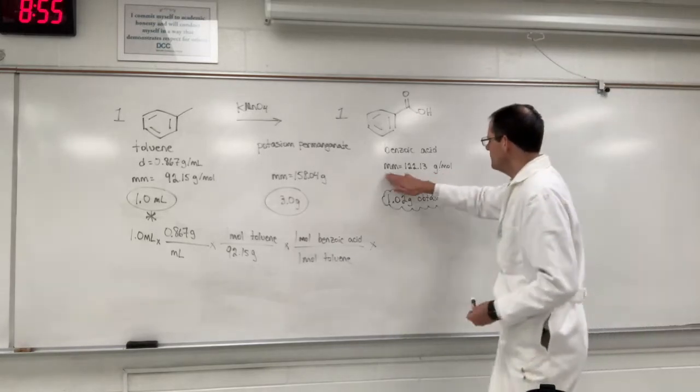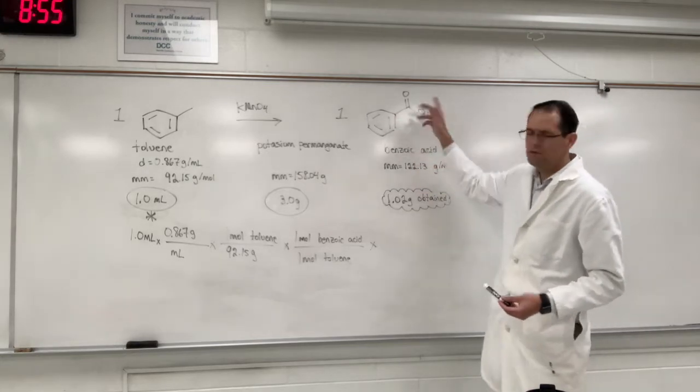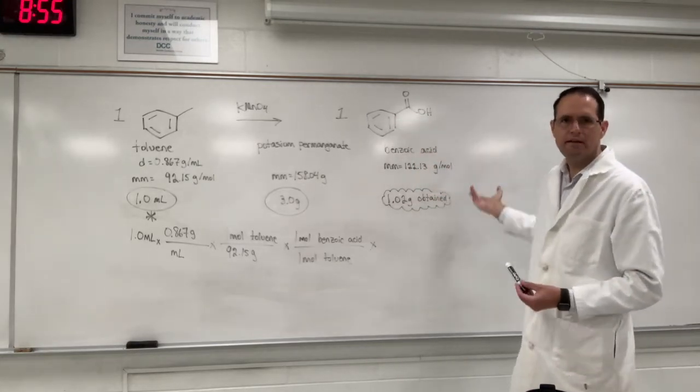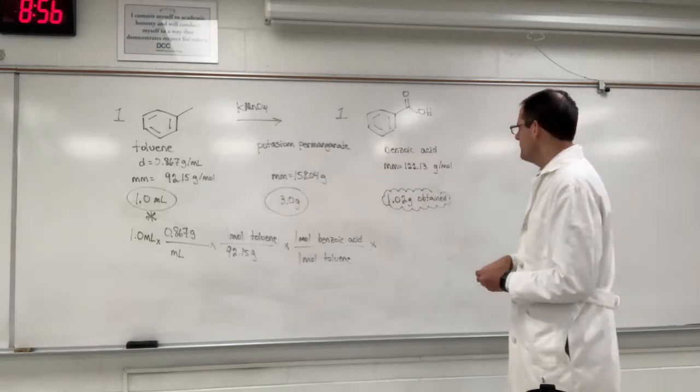Now we use the molar mass of benzoic acid here. That's the molar mass, you count up the atoms and you use your periodic table if it's not given to you. Or you can go online and look up the molar mass as well. So this has a molar mass of 122.13 grams per mole and this will give you the theoretical yield.